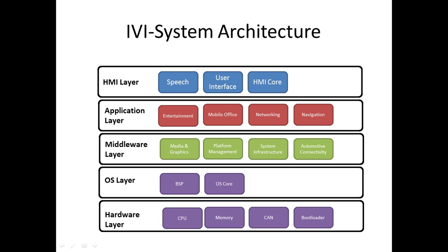As shown in the figure, the bottom layer is the hardware layer. On top of it we have the OS layer, then middleware layer, then application layer, and finally the HMI layer. In the hardware layer we have sub-modules such as CPU, memory, CAN, and bootloader. In the OS layer we have BSP — Board Support Packages — and OS core. In the middleware layer we have media and graphics, platform management, system infrastructure, and automotive connectivity. In the application layer we have entertainment, mobile office, networking, and navigation. In the HMI layer we have speech user interface and HMI code.